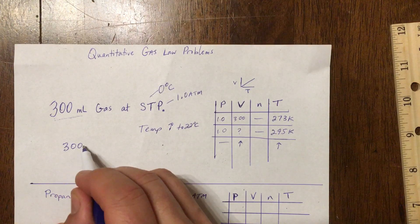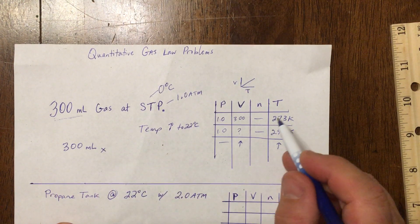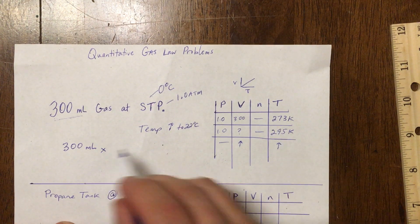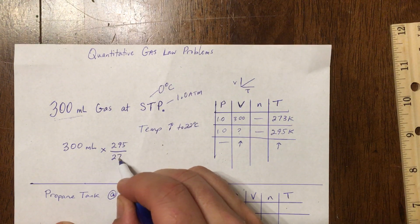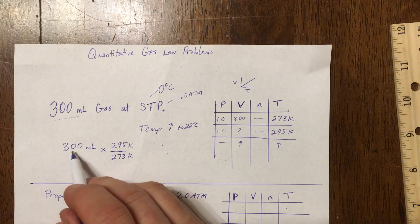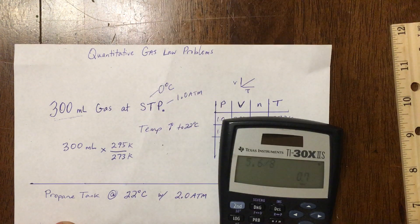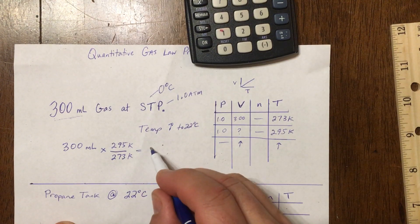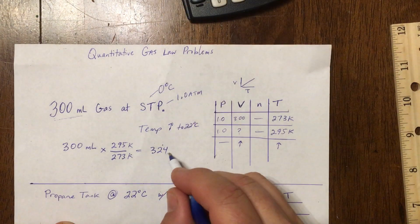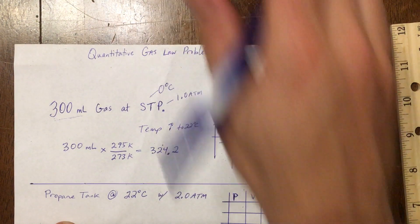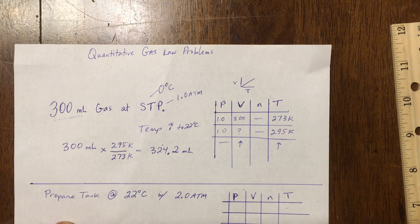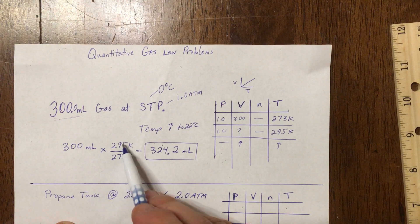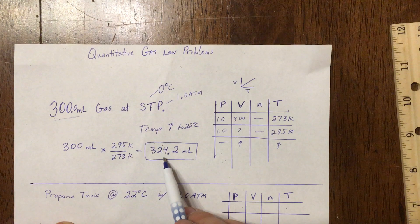So how do we actually do this problem? We take our 300 milliliters and multiply by a factor that represents the temperature change. Since my temperature is going up, I need a factor greater than one — so I use 295 over 273. Volume equals 300 milliliters times 295 divided by 273, which gives me a volume of 324.2 milliliters. That's my final answer — a temperature increase to 22 degrees Celsius gives a new volume of 324.2 milliliters.